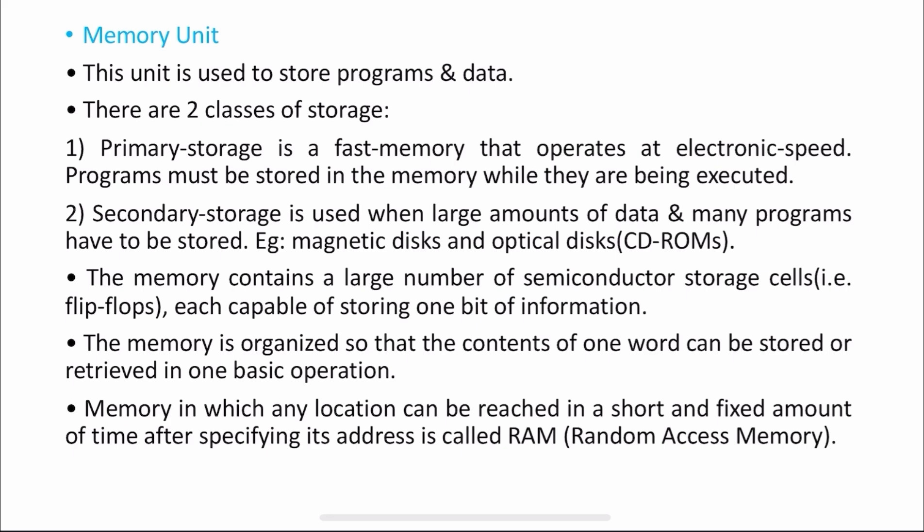In secondary memory, we can store as much data as we want. Examples for secondary memory include optical disks, CD-ROMs, and pen drives. Your CDs and DVDs can be used to store information. Whatever memory we consider, whether primary or secondary, that memory consists of a large number of semiconductor storage cells, which we can call flip-flops, each capable of storing one bit of information.